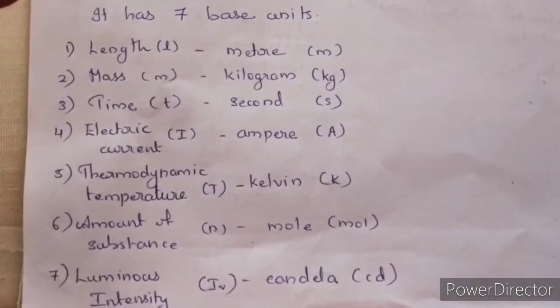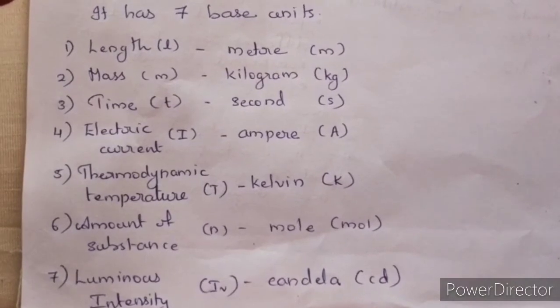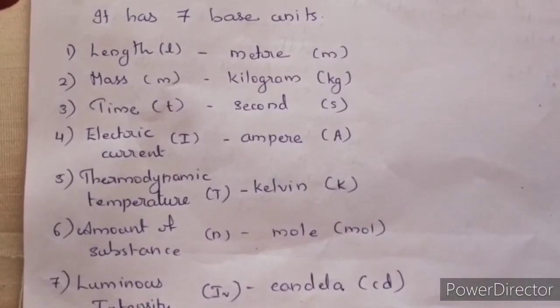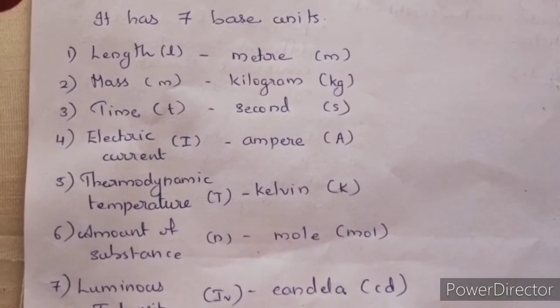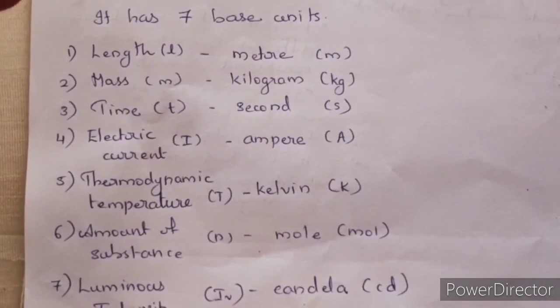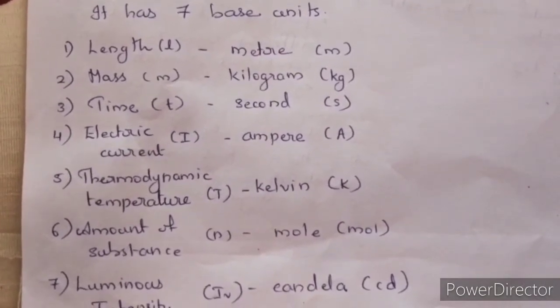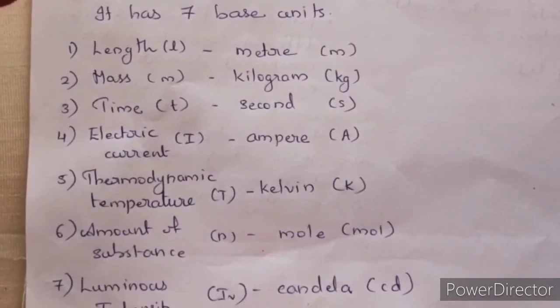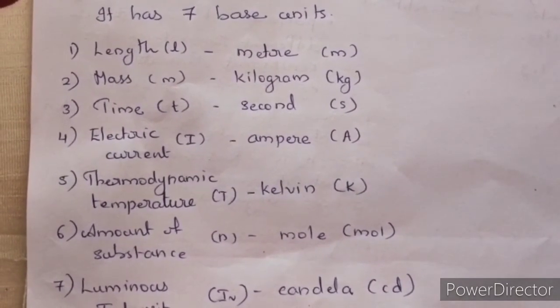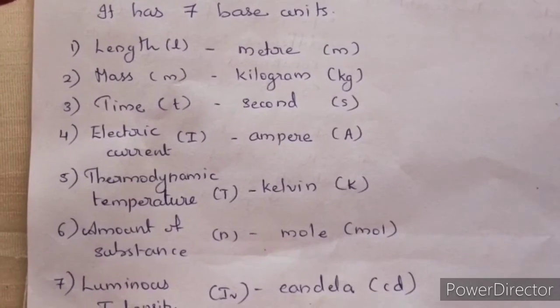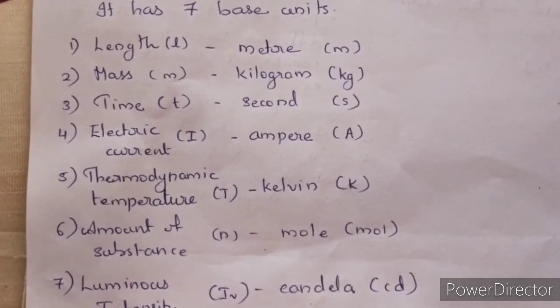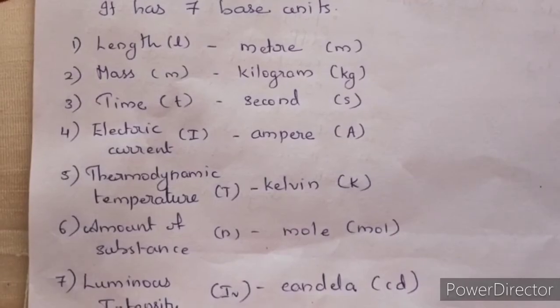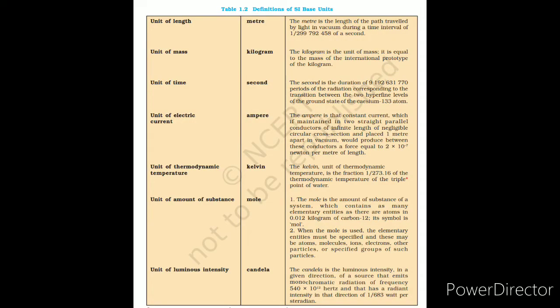The SI system is mainly based on seven base units. We can define measurements and combine them using these seven base units: length, mass, time, electric current, thermodynamic temperature, amount of substance, and luminous intensity. These are described in Table 1.2 in your textbook — you can read it for your information.